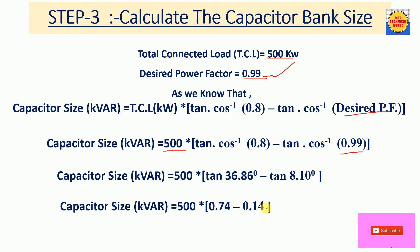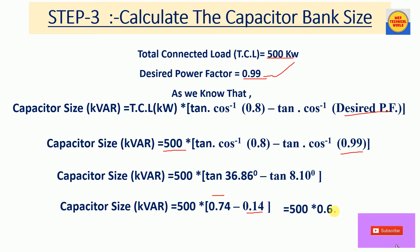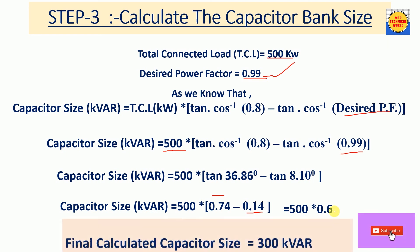Tan(36.86°) equals 0.74 and tan(8.10°) equals 0.14. Subtracting 0.14 from 0.74 gives 0.60. So the calculation becomes 500 × 0.60, and our final calculated capacitor bank size is 300 kVAR.